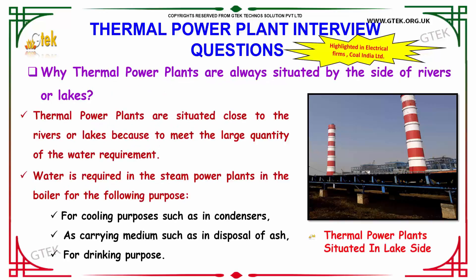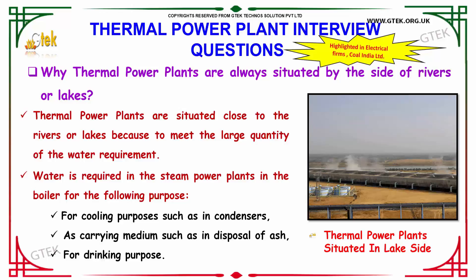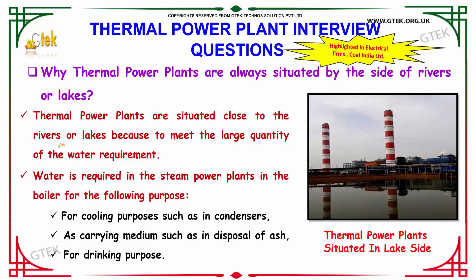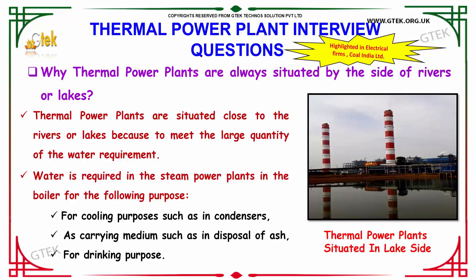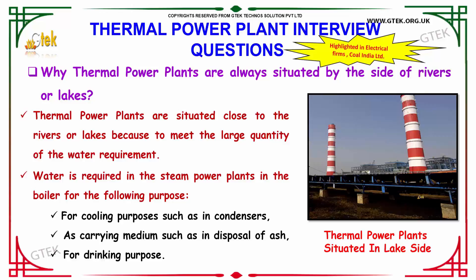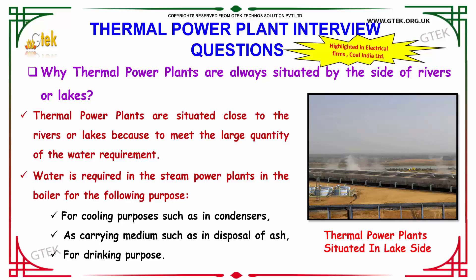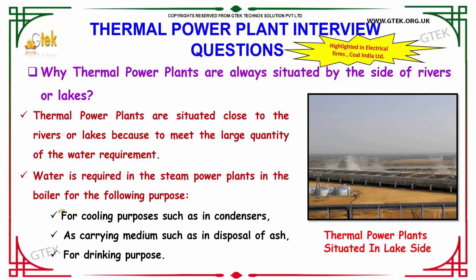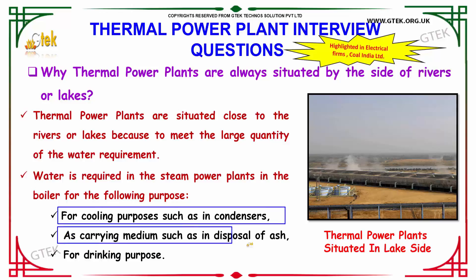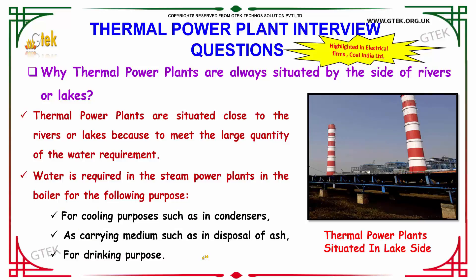Why are thermal power plants always situated by the side of rivers or lakes? Thermal power plants are situated close to rivers or lakes to meet the large quantity of water requirement. Water is required in these power plants in the boiler for the following purposes: cooling in the condenser, as a current medium for the deposit of ash, and also for the purpose of drinking.